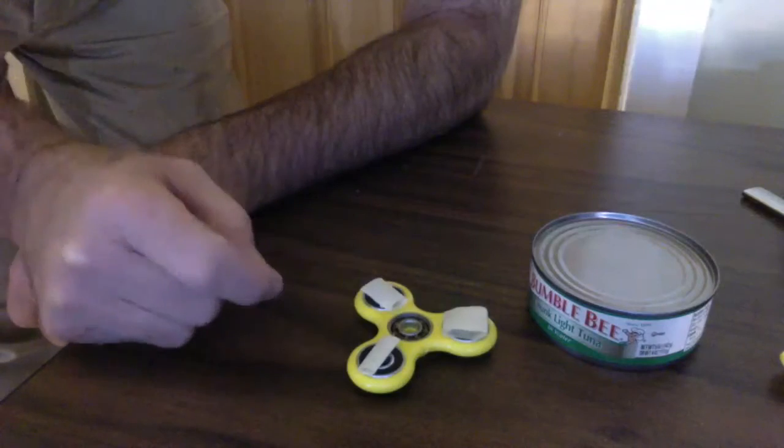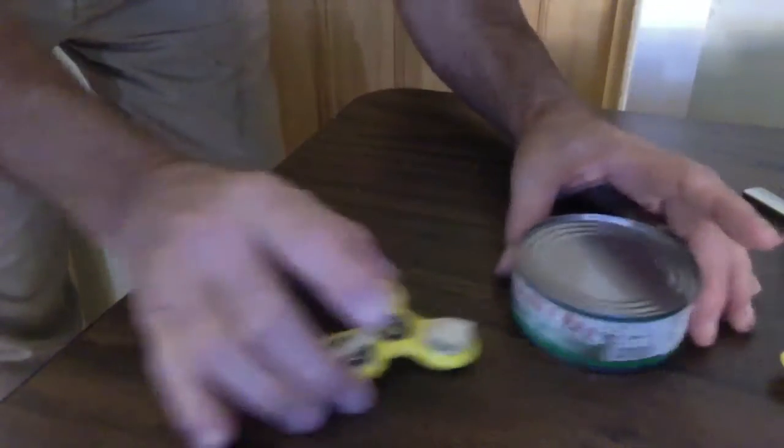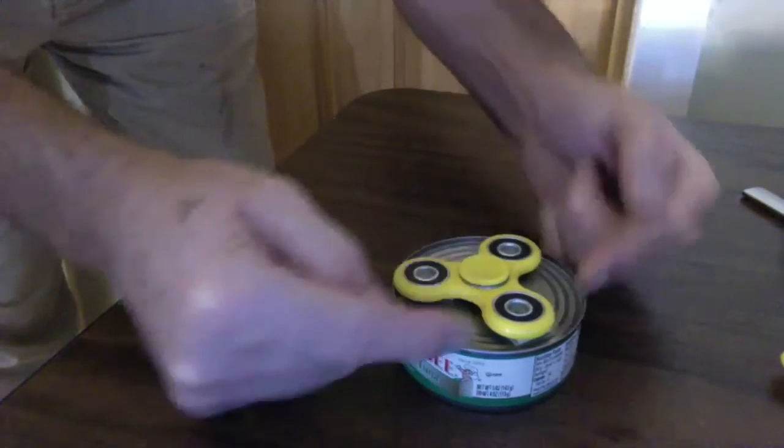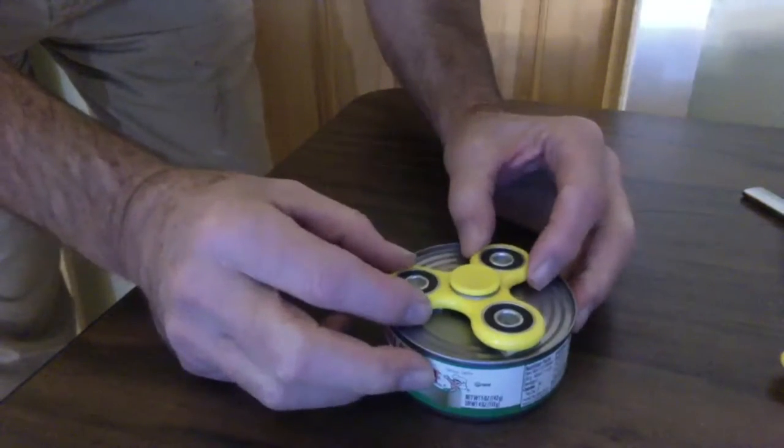Making sure not to get tape in the center, then you just take the fidget spinner and center it on the can. There is room to move it around a little bit - you got to make sure that it's right in the center or the can will wobble.